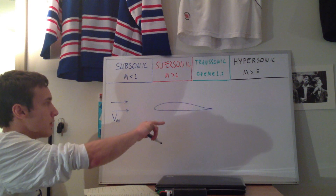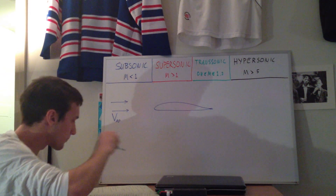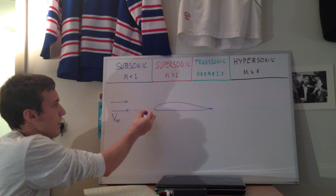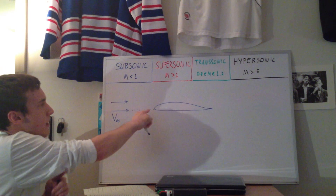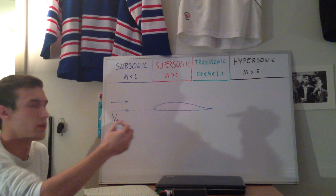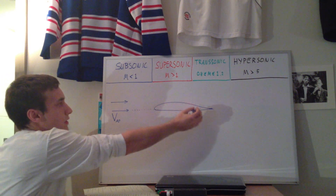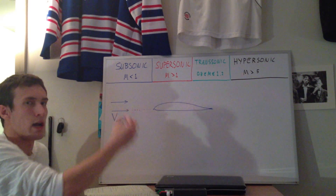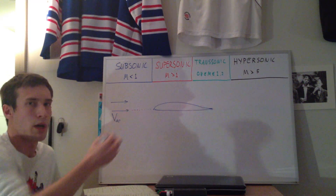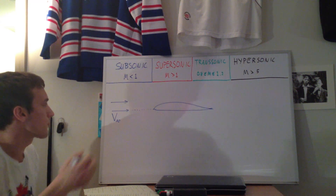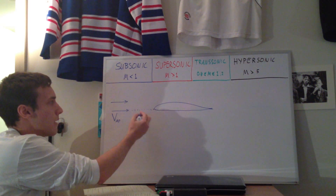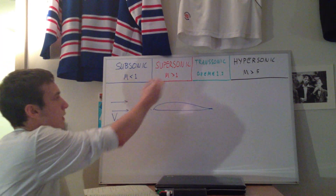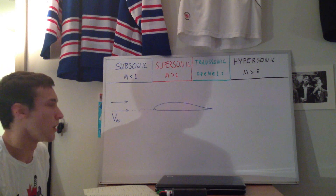For subsonic flow, we have continuously varying properties in the entire field around the airfoil. The molecules are traveling towards the airfoil, and as they get close to it, they sense its presence and the flow field adjusts — for example, the pressure adjusts based on what the flow sees. The molecule essentially detects the airfoil ahead and propagates that knowledge upstream at a speed equal to the speed of sound. Because it's allowed to do that, you have this continuously varying flow with continuously varying properties everywhere around the airfoil, out to infinity, always subsonic.